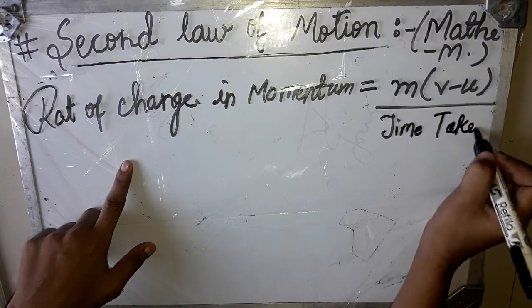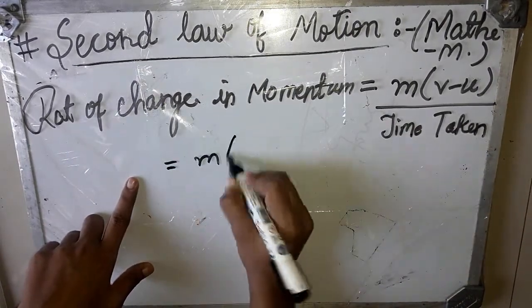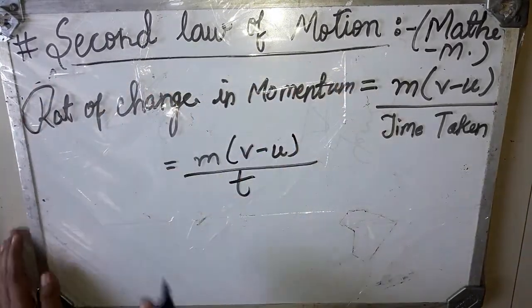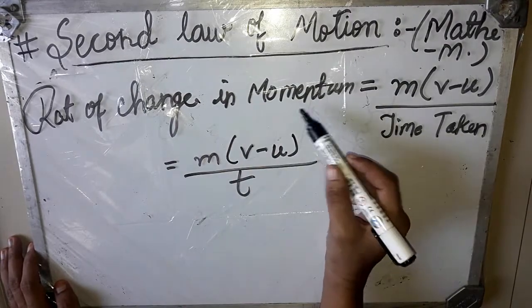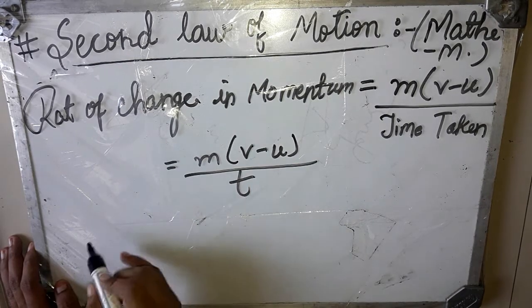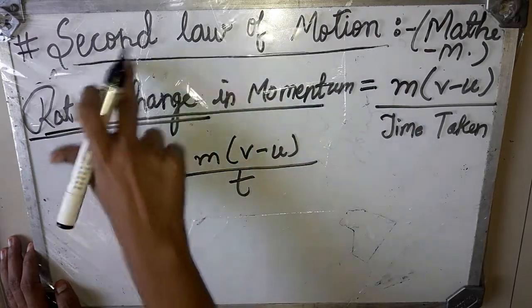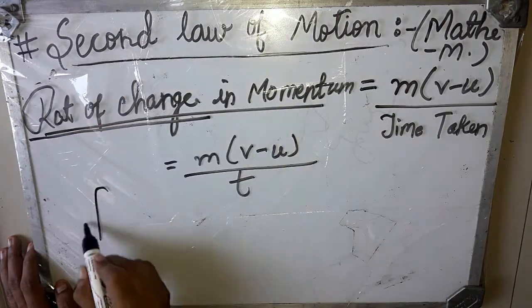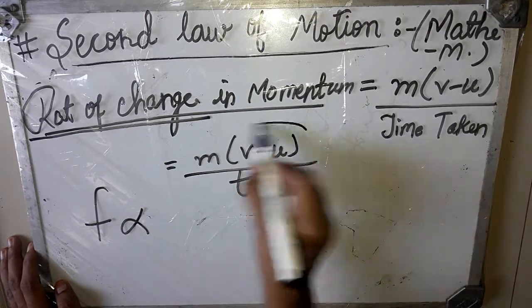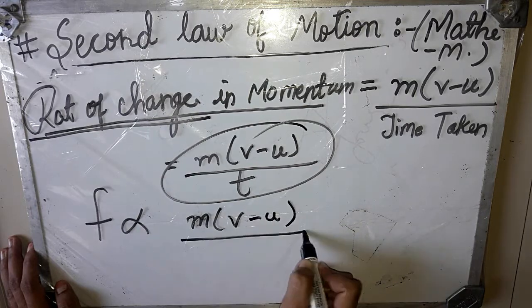We denote time taken as t. So the rate of change of momentum becomes m(v minus u) upon t. We are dividing by t because, as per the statement of the second law of motion, change in momentum occurs as dp upon dt. From the second law, this rate of change is proportional to force: force is directly proportional to dp/dt, which equals m(v minus u) upon t.